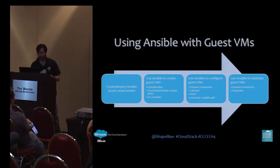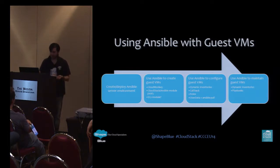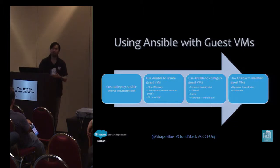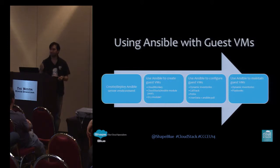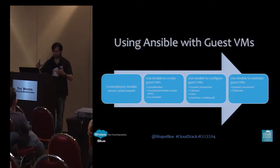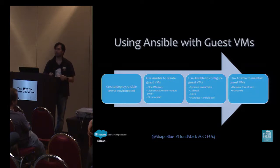In terms of how we'd configure guest VMs, we can use dynamic inventories to know what we've got in the environment. In the paid version of Ansible — Tower — it has a module called Callback, where it will poll and wait for the virtual machine you've started to come alive before carrying on with the rest of the commands. We would then use roles. We could also inject user data into the virtual machines to tell them what kind of VM they're going to be, and then use Ansible Pull, which pulls from a central repository of playbooks what it needs to do to be that virtual machine.